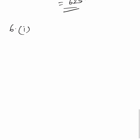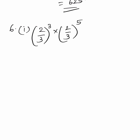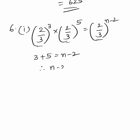Moving on to the sixth question: find the value of n. First part: 2 by 3 whole to the power 3, into 2 by 3 whole to the power 5, equals 2 by 3 whole to the power n minus 2. Since all the bases are equal, we equate the exponents: 3 plus 5 equals n minus 2, therefore n minus 2 equals 8, so n equals 10.